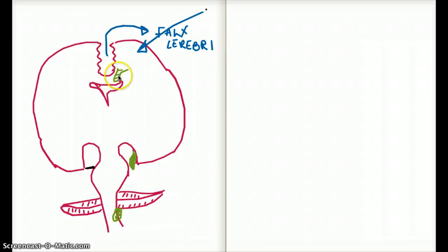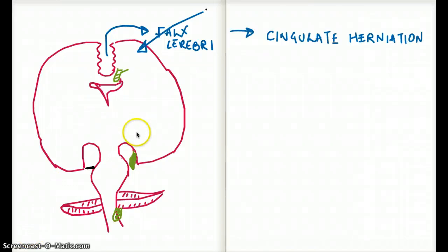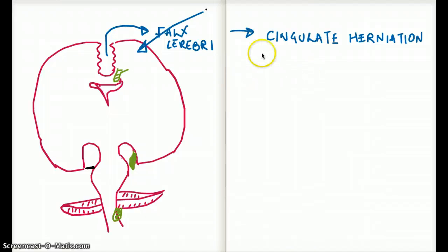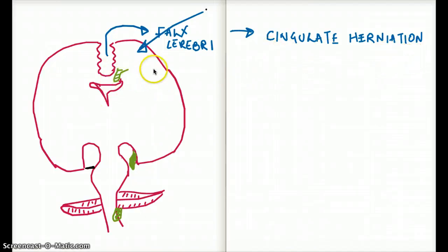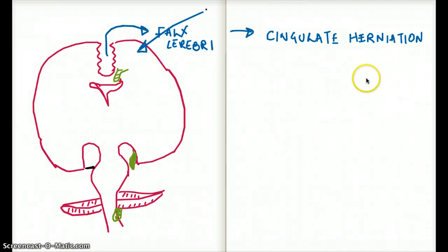Which gyrus is herniating? The cingulate gyrus. That's another reason why, when this gyrus herniates, it's also called cingulate herniation. So this herniation has two names: sub-falcine herniation or cingulate herniation.